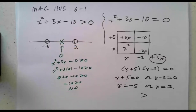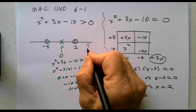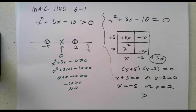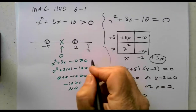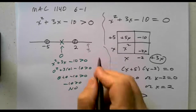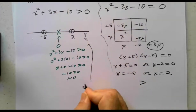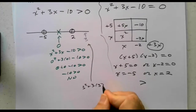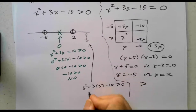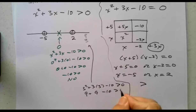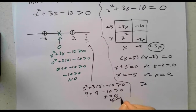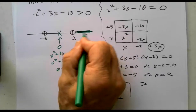Beyond 2, a number we could try is 3. Plugging into x squared plus 3x minus 10: is 3 squared plus 3 times 3 minus 10 greater than 0? That's 9 plus 9 minus 10, which is 18 minus 10, which is 8. Is 8 greater than 0? Yes. So we're going to shade that interval, going from 2 all the way to infinity.